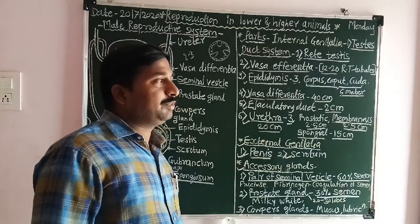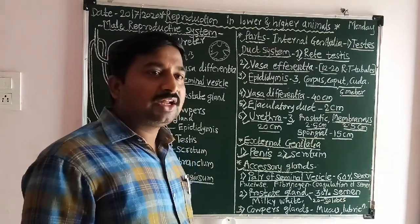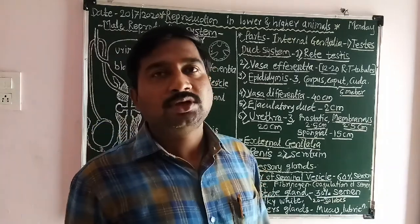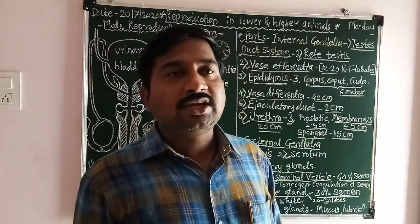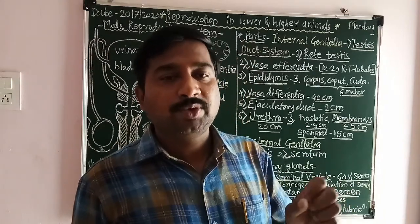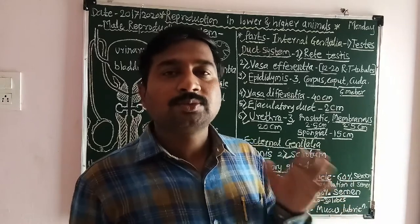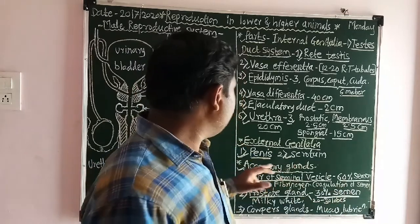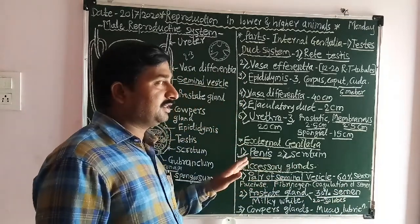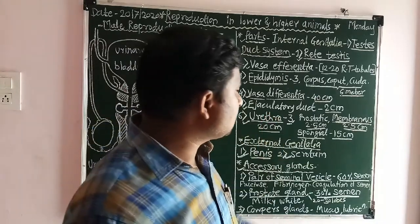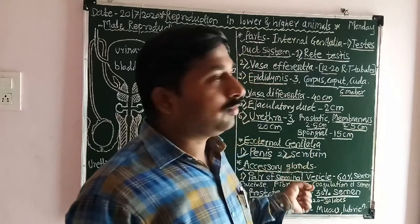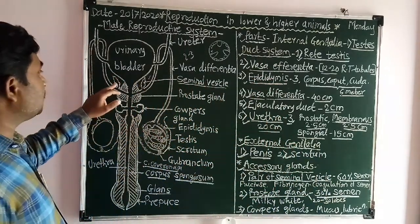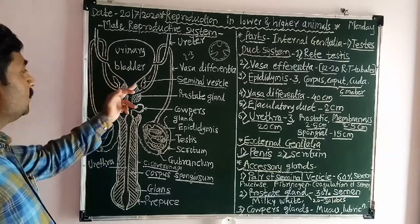Fructose plays an important role in the nourishment of sperm. Fibrinogen plays an important role in the coagulation of sperm, while prostaglandins play an important role in the contraction of the female genital tract for the movement of sperm. The total seminal vesicle secretion forms about 70% of the semen.